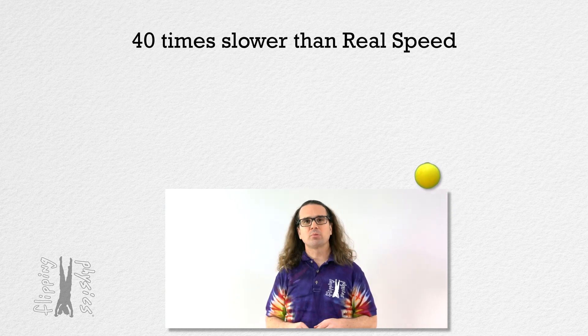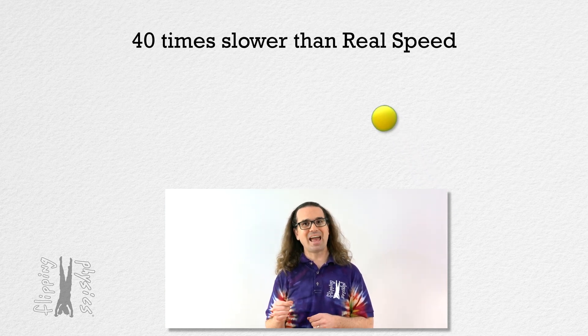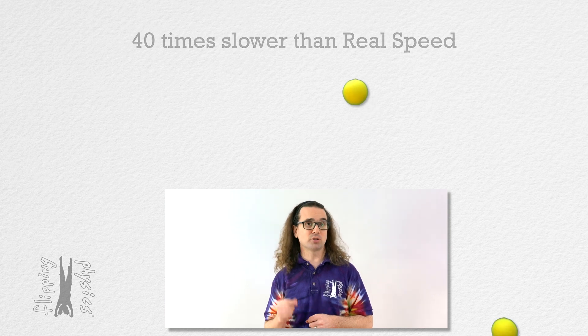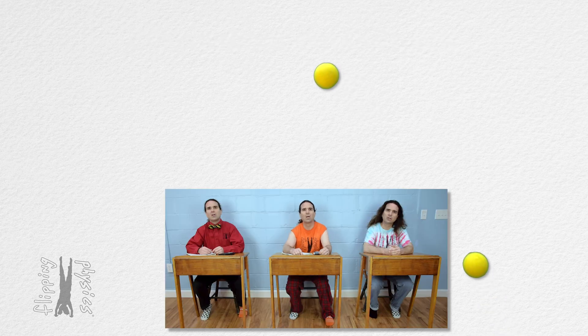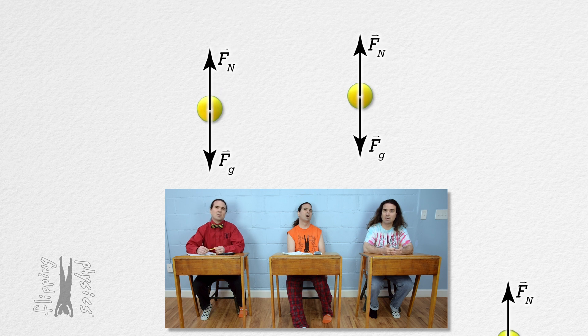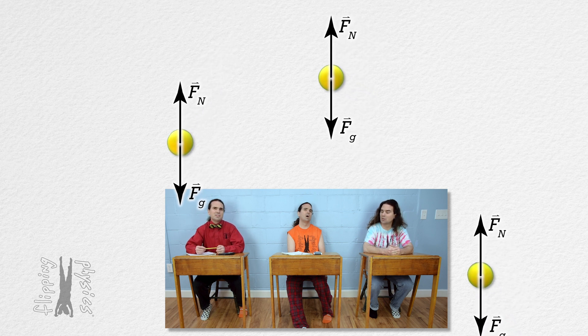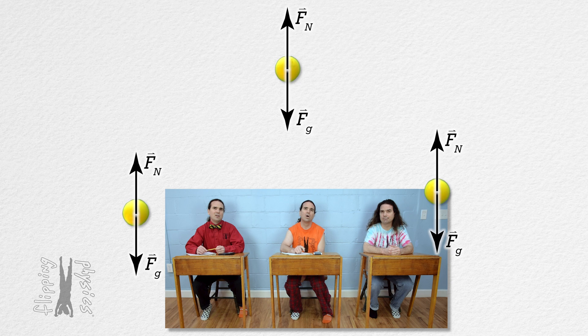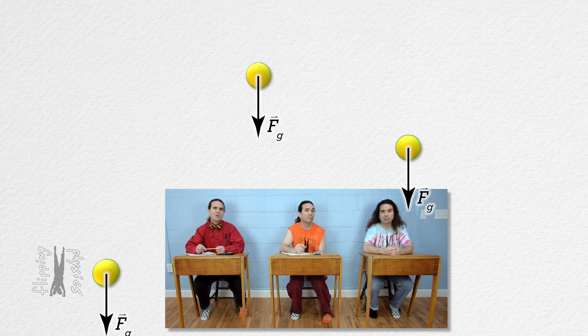Bo, please draw a free body diagram of all the forces acting on the ball while it is in projectile motion. Sure. Well, clearly the force of gravity is acting down on the ball. And there is a force normal acting up on the ball. What surface is causing that force normal? Right. There is no force normal.